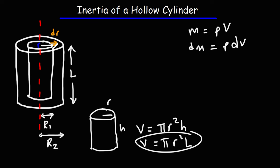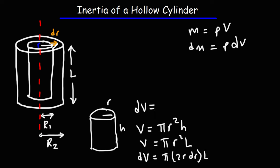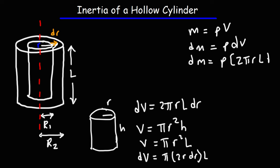What I want to do is get dv from the volume equation. In order to do that, I need to differentiate both sides. l is a constant, so we're not going to differentiate that. r is what changes, so the derivative of r squared is going to be 2r dr. We get that dv is 2π r l dr. So replacing dv, we get that dm is ρ times 2π r l dr.